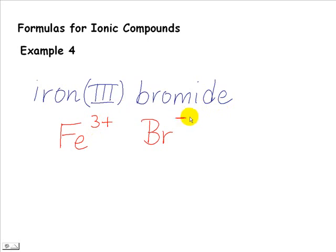We ignore this because it's a minus 1. The 3, we must drop and swap. We move it down to the right-hand side of the bromine on the bottom, right there.